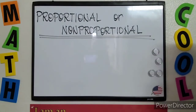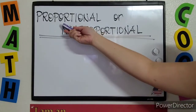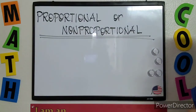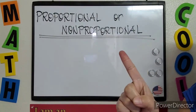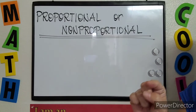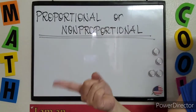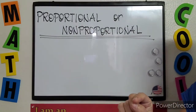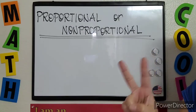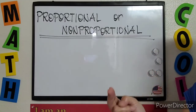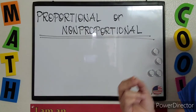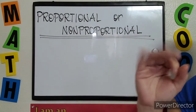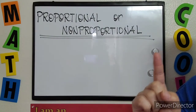Hello! Our lesson for today is proportional or non-proportional. In this lesson, you will be doing two things. The first one is, you are going to tell whether the given graph, table, or situation represents a proportional relationship or not. And the second one is, you are going to justify your answer, which means you are going to explain your reasoning. This topic is divided into three. Let us have the very first one, which is all about graphs.